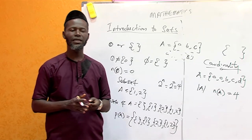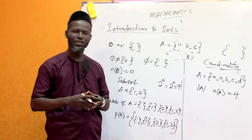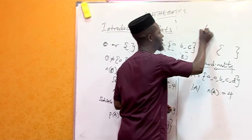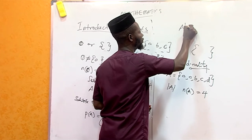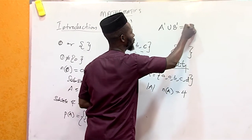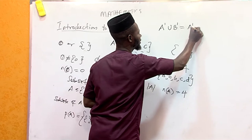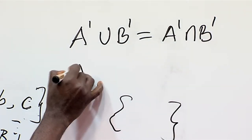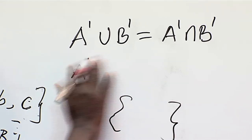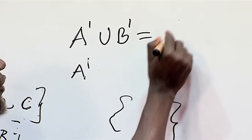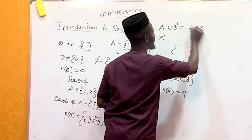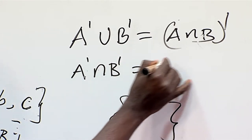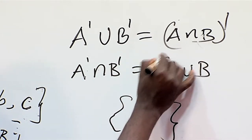There is a particular law called De Morgan's theorem. De Morgan's theorem says: first, (A ∪ B)' = A' ∩ B'. Second, (A ∩ B)' = A' ∪ B'. These are the two forms of De Morgan's law.